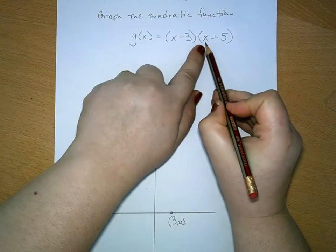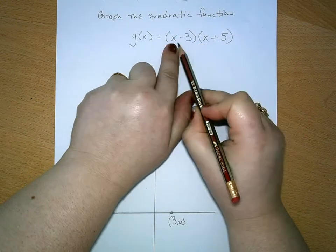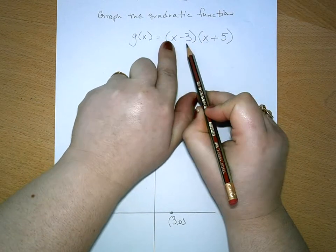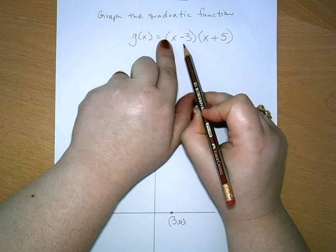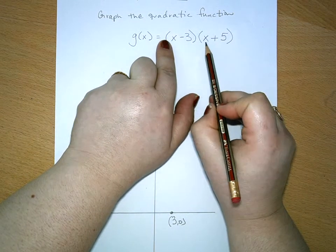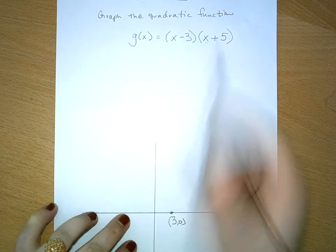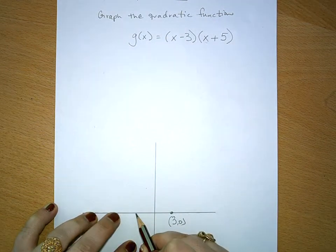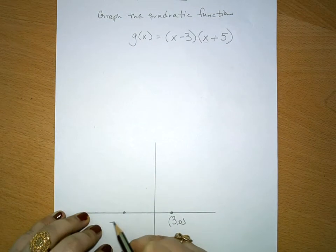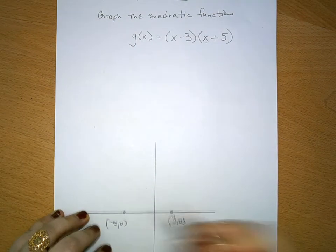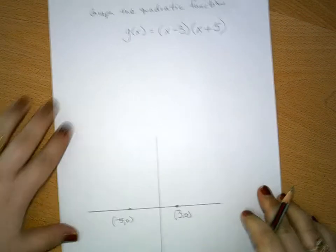Also, if we substitute in a negative 5 here, we'd get 0. Then we'd get 0 times, or negative 5 plus 5 is 0, times negative 8, which is also 0. And so we get that negative 5 also has an output of 0. So here we have our two intercepts.